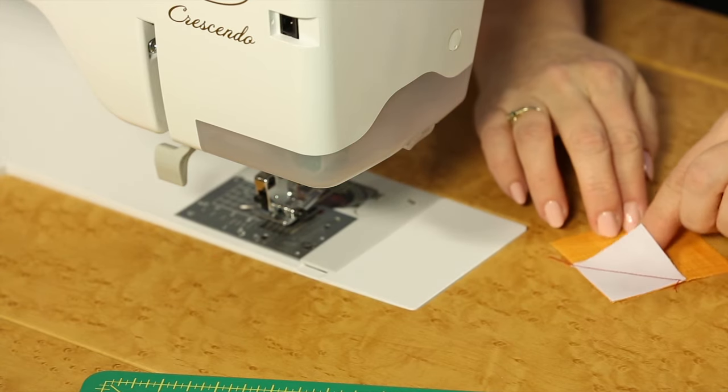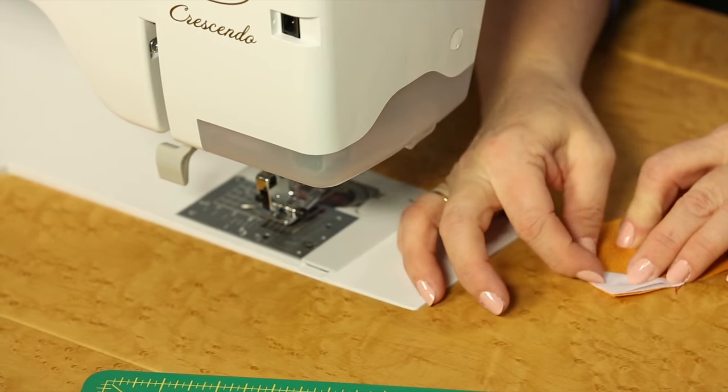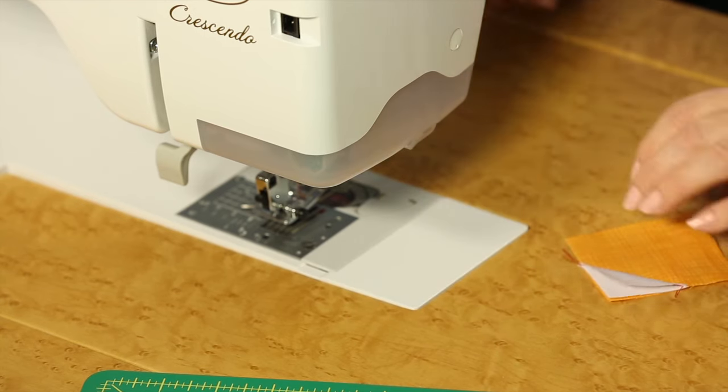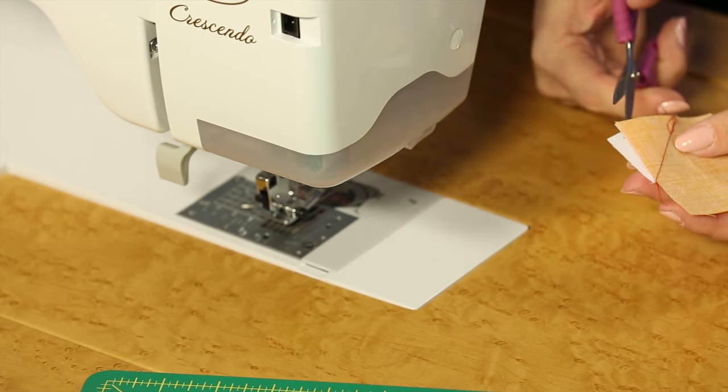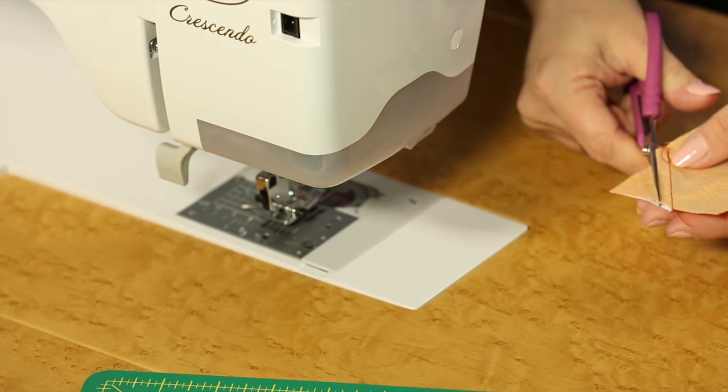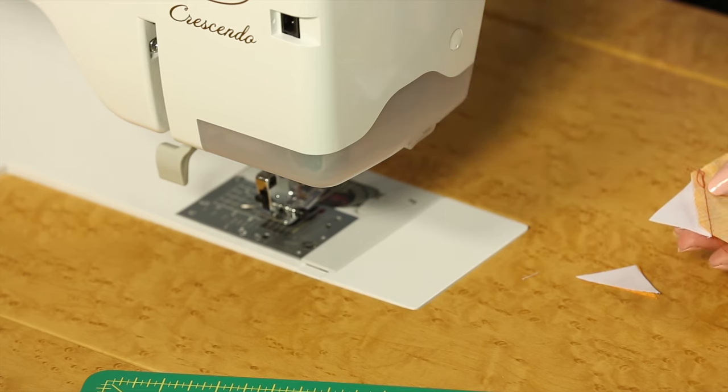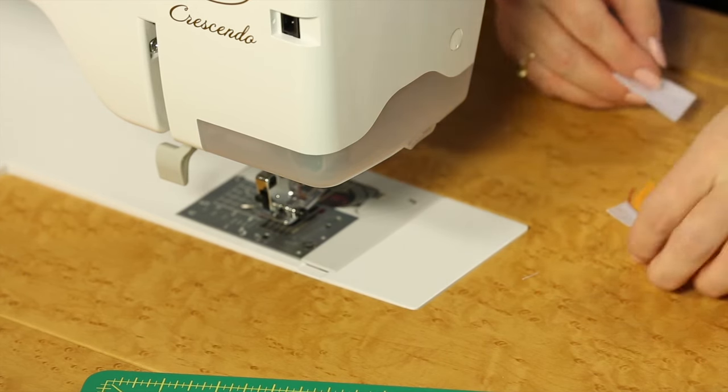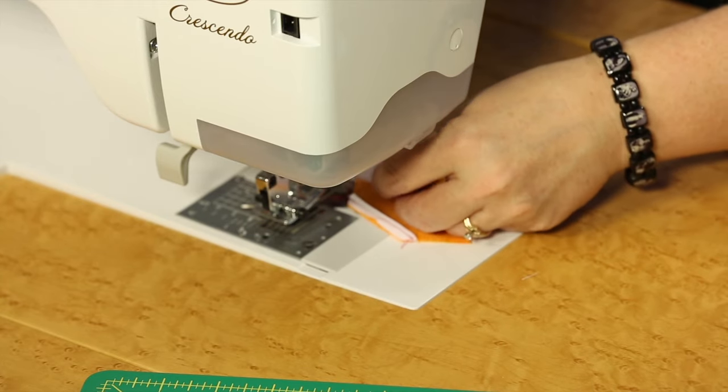Okay, we'll take that out. I'm going to just press that open with my finger first, kind of score along that, make it nice and flat. You'll want to take this to the iron when we're finished, but at this point I'm just going to come in and take away that underneath triangle, and then add the second piece in the same manner.